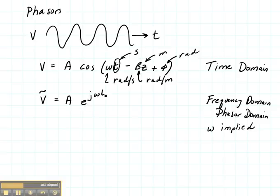It's going to be e to the j omega t, e to the minus j beta z, and e to the j phi. Because this is the frequency domain, this term right here, e to the j omega t, is assumed. It's implied.